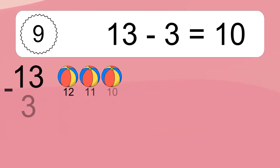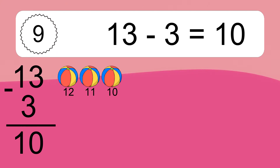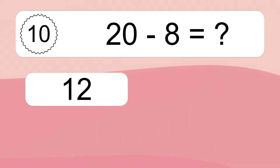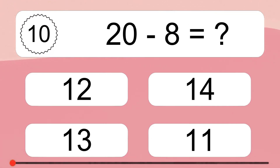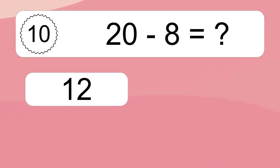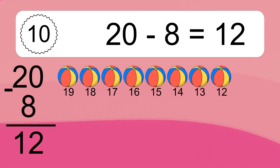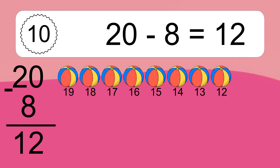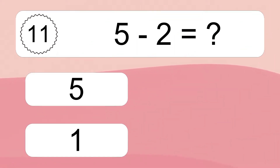13 minus 3 equals 10. Let's count it: 12, 11, 10. 20 minus 8 equals what? 20 minus 8 equals 12. Let's count it: 19, 18, 17, 16, 15, 14, 13, 12.